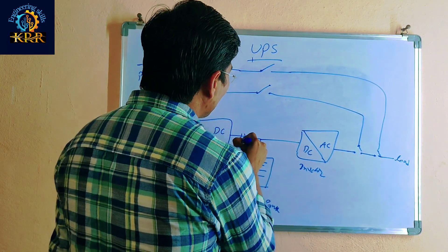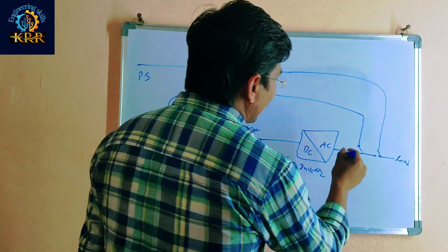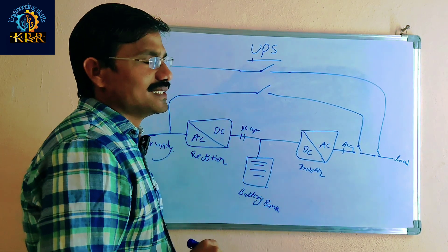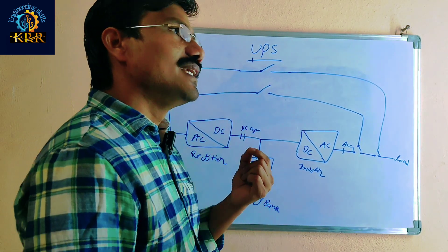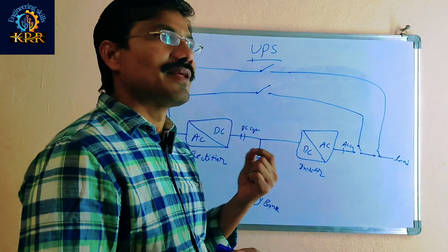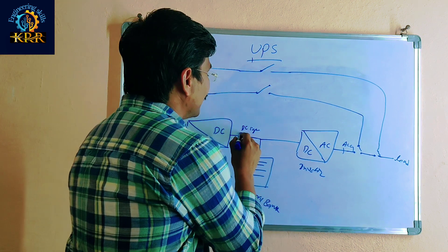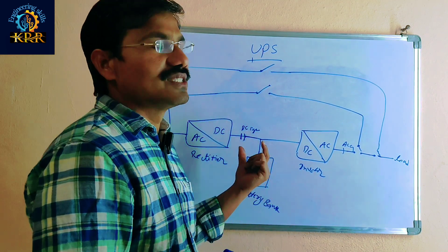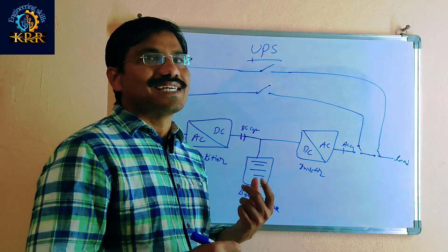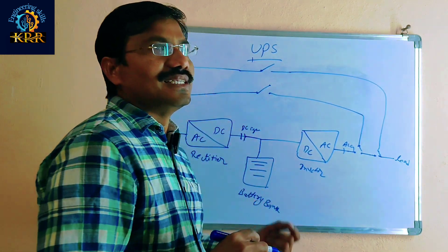After that, here some DC capacitors are there. The DC coming out of the rectifier is not pure DC — some ripple AC is available. Those DC capacitors block the ripple AC so that pure DC only passes through. The DC capacitors work like a filter; they block the AC ripple.